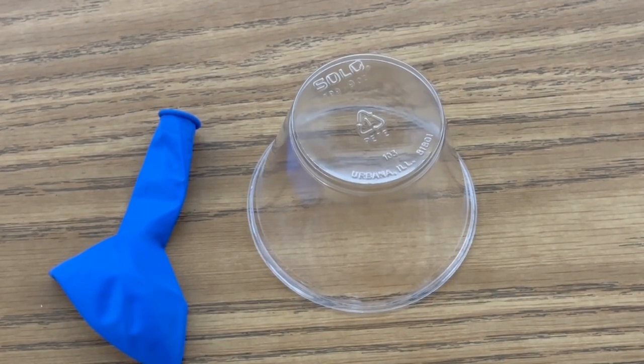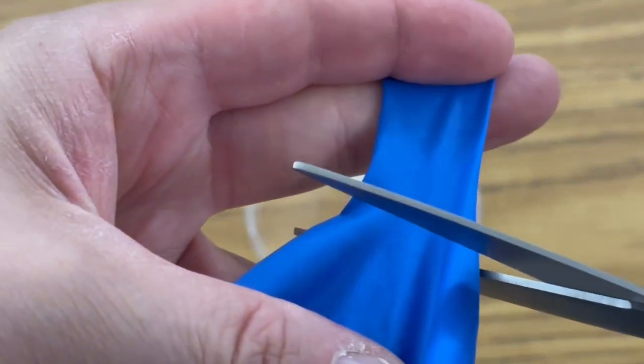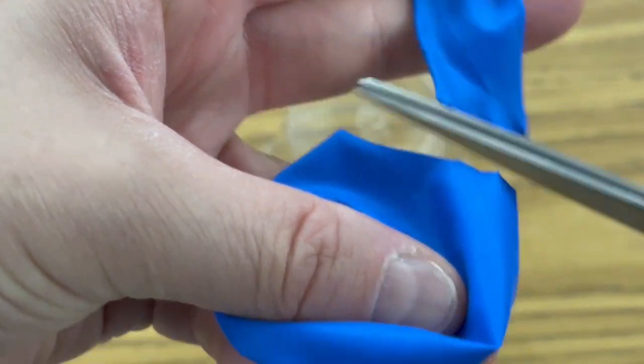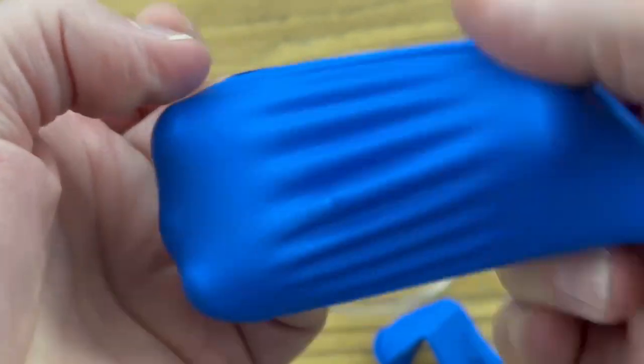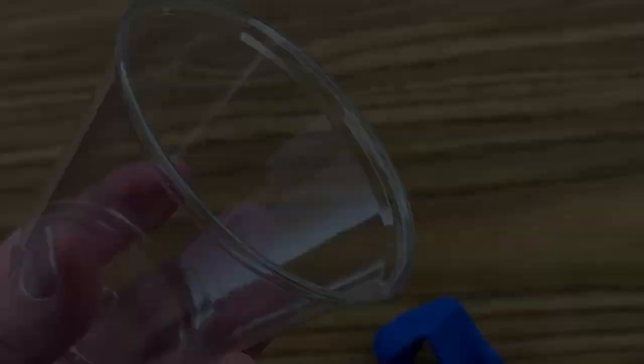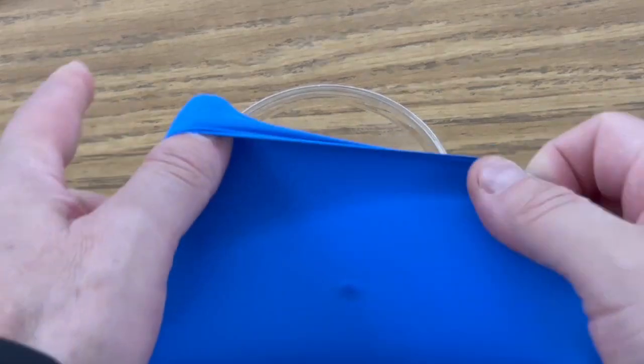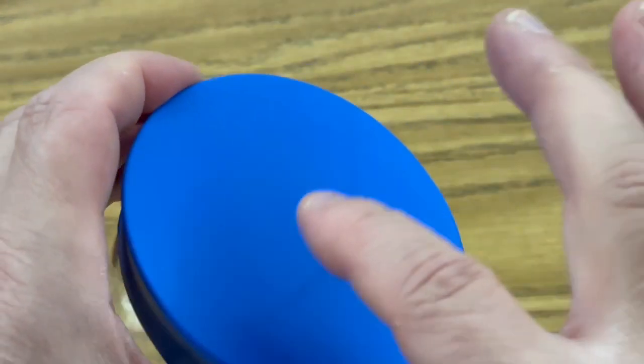The first step is to make a diaphragm for your cup by cutting a balloon pretty close to the neck of the balloon, about here, and then you're going to stretch this over the mouth of your cup so it's a tight diaphragm that covers the opening. So it should look like this.